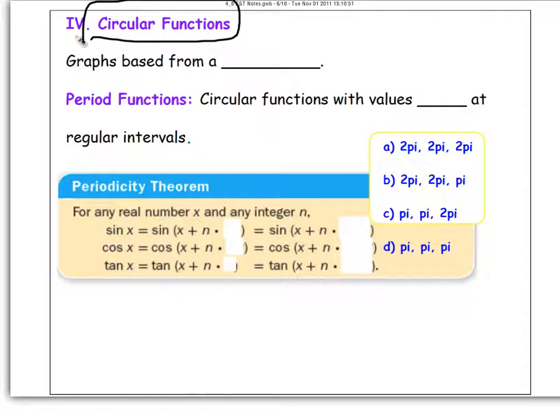First thing we need to talk about is what are circular functions. If you think about it, the sine, the cosine, and the tangent graphs that we derived—the cosine is the C shape, the sine is the S shape, the tangent is this new shape we saw today. Where did those come from? Well, we went around the unit circle and we got the values from it. So, the sine, cosine, or tangent are actually called circular functions because they come from a circle.